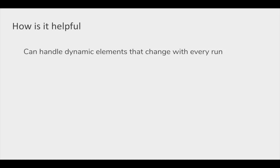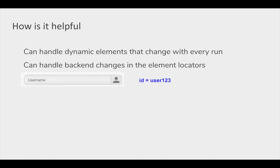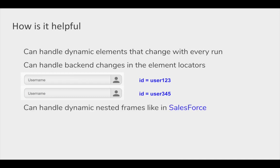It can handle the dynamic element changes in case there are any dynamic property changes with every run, or if there are any backend changes from the dev team in a new release and the element locators or properties you have used have changed. For example, if you have a username text box and the ID property is 'user123' — which you used in a locator while creating your test — and during a future run the ID changes to 'user345', then without self healing the step will fail. We would then have to invest a lot of time and effort to make all the corrections.